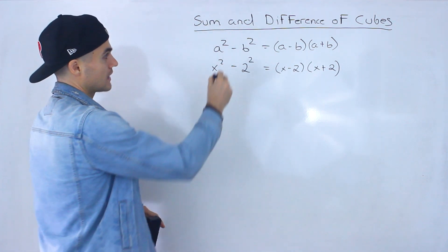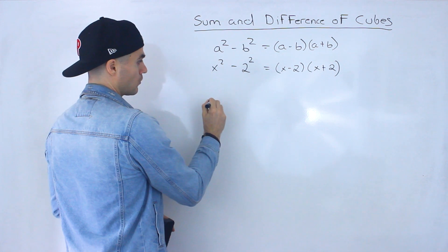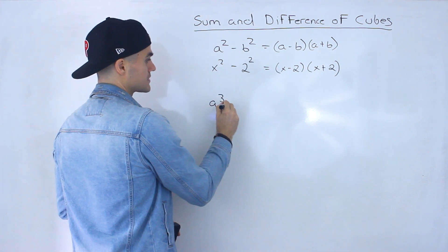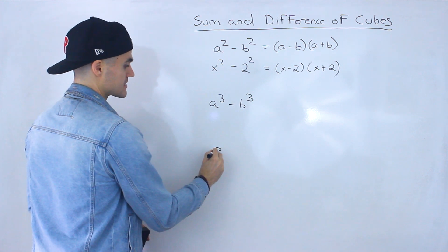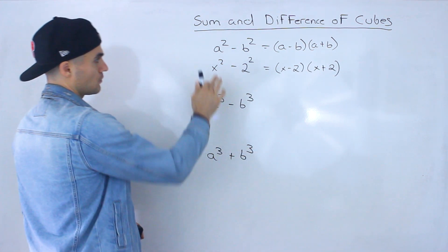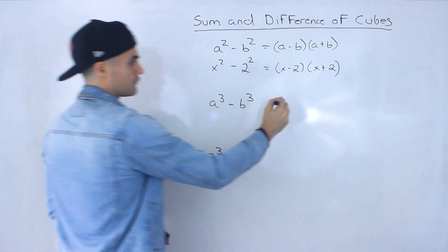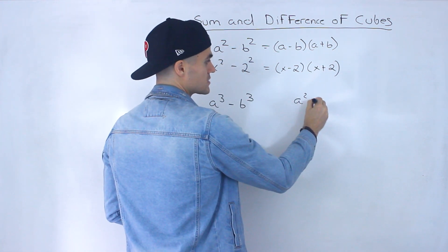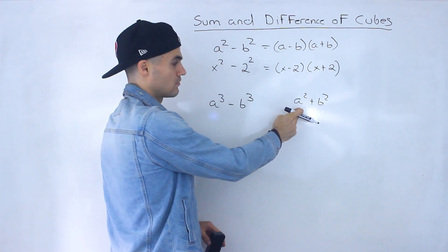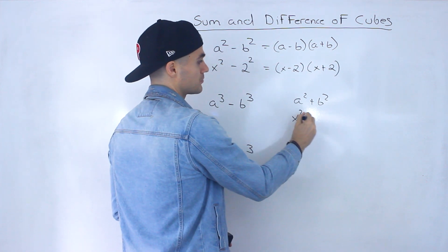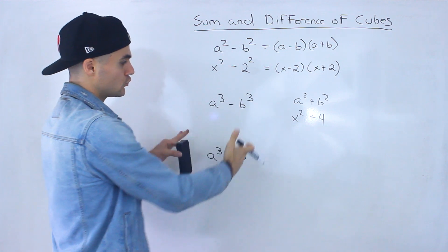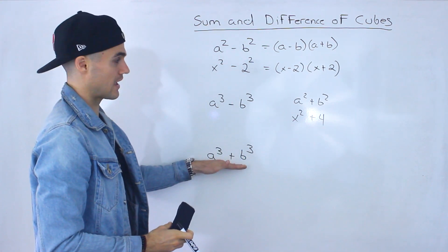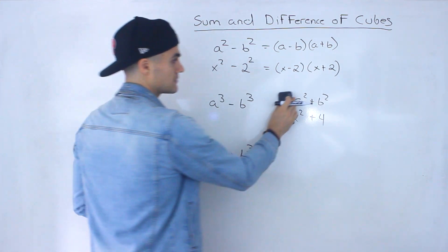And so that's what we're going to be doing in this section as well. But instead of having a difference of squares, we're going to have a difference of cubes and also a sum of cubes. So when you're dealing with squares, if you have a squared plus b squared, you can't factor that. So if you had x squared plus 4, you can't factor that. But when you're dealing with cubes, you can have a sum of cubes. So that's what makes them a little bit different.